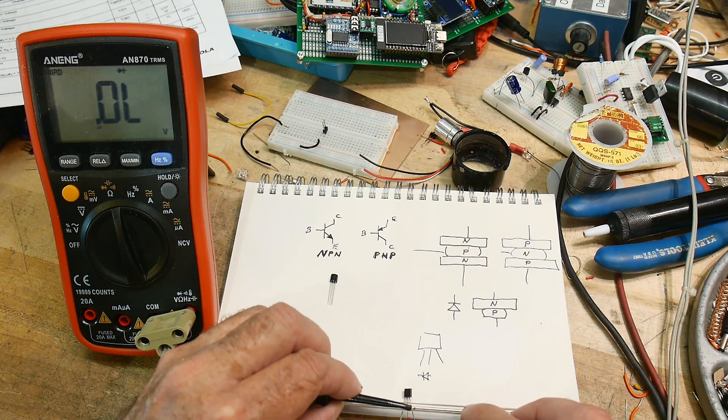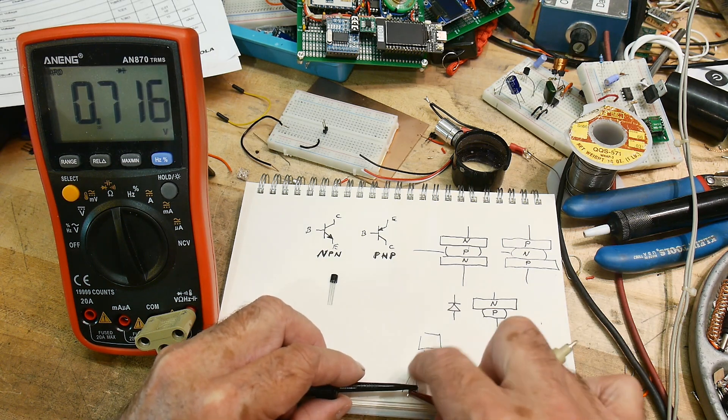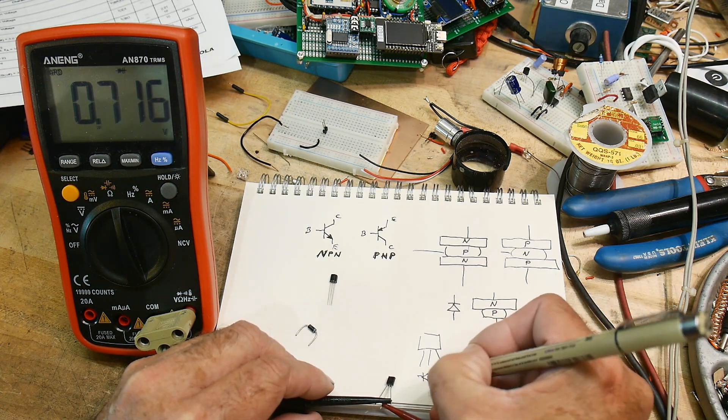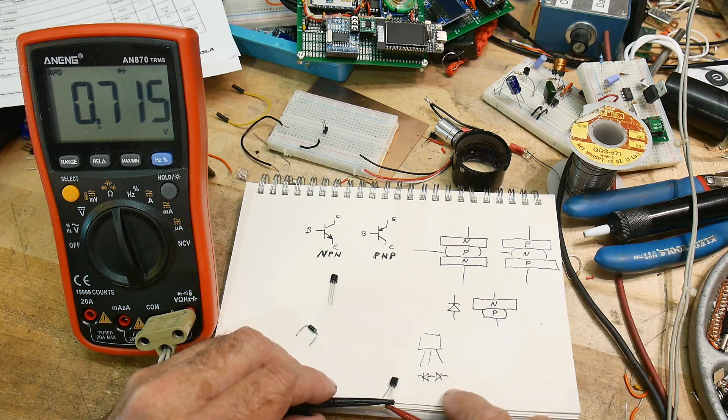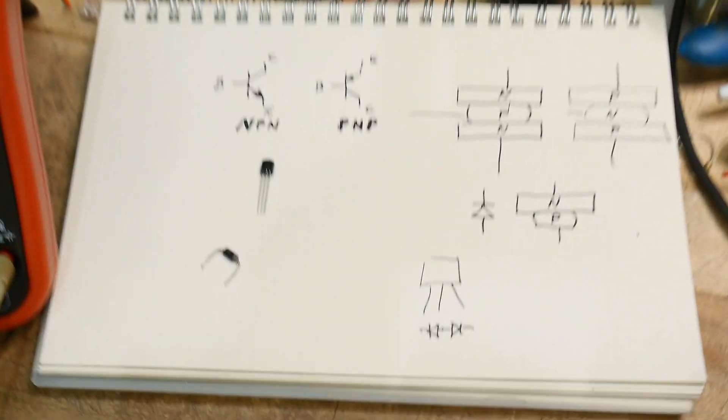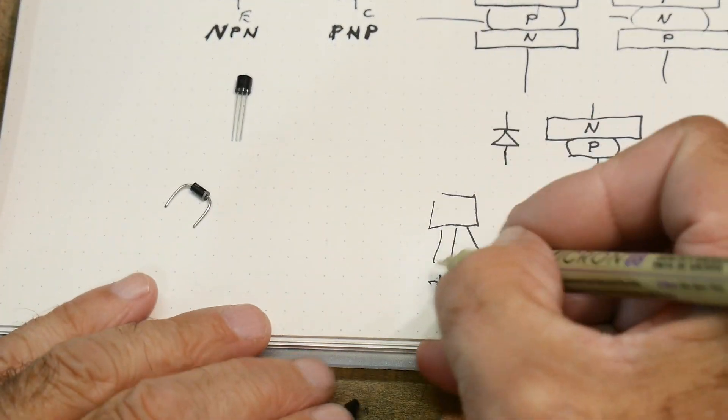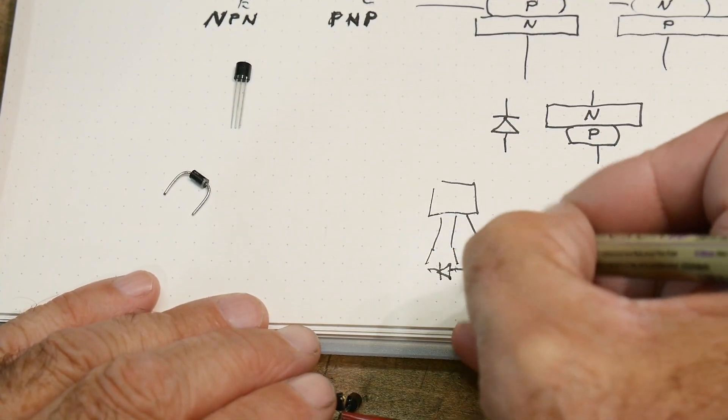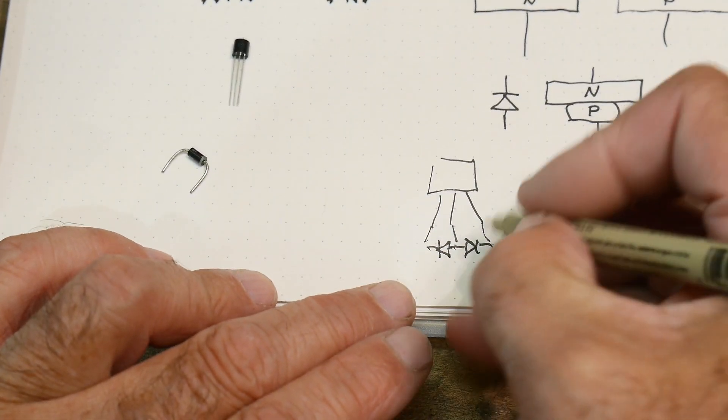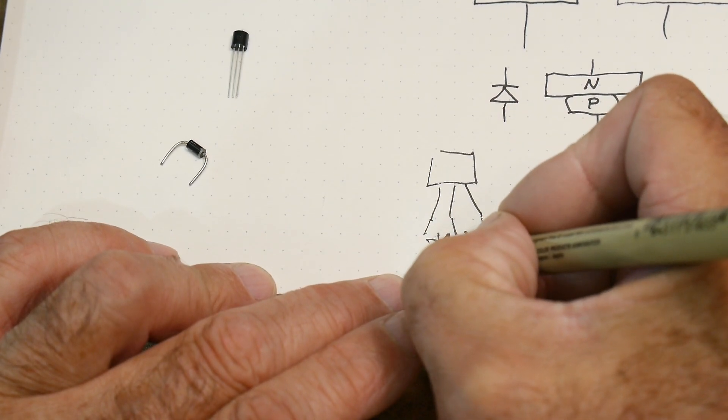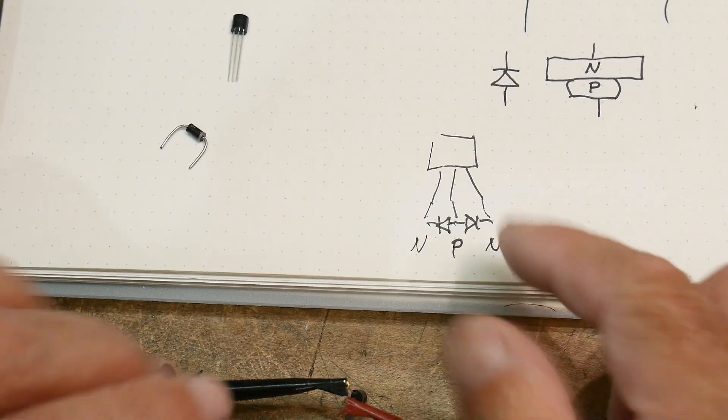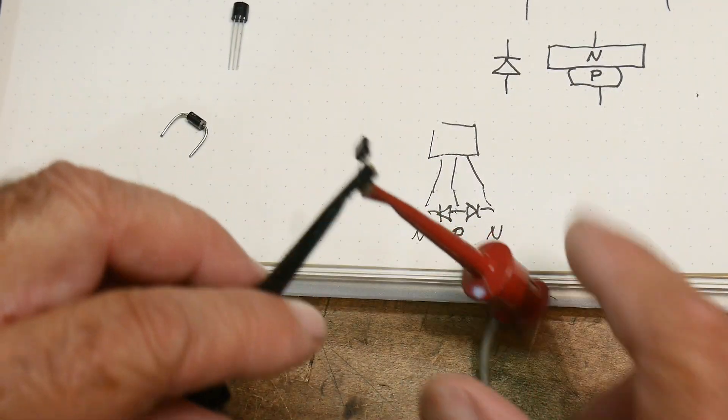And right now, we've shown that between these two, we have a diode like that. And then, if I move the negative one over to this side, it's 0.7 as well. So we also have a diode that goes in that direction. So we've tested it, and we know that the thing looks something like this. There's two diodes, and the center is the P, and the two Ns are Ns. So guess what? That transistor is an NPN. We just tested it.